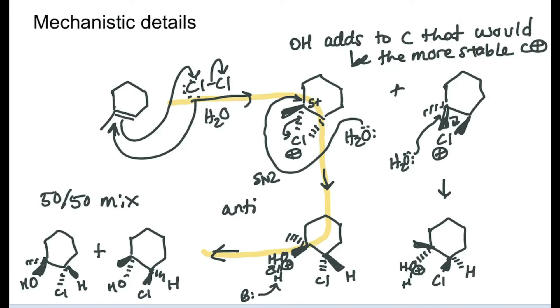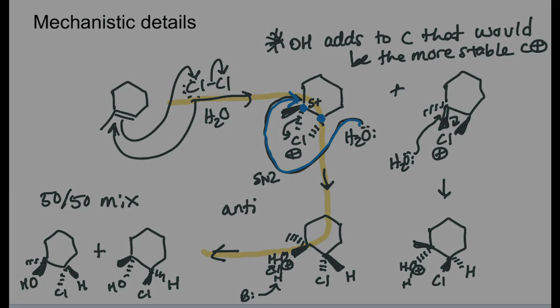Knowing that the chloronium forms on either face and that the water attacks the more substituted of the two carbons, or the carbon that could bear a positive charge better - sometimes we'll see that it's not a matter of substitution so much as it is a resonance issue. I always look and see which carbon atom of the two carbon atoms in the chloronium could bear a positive charge better.